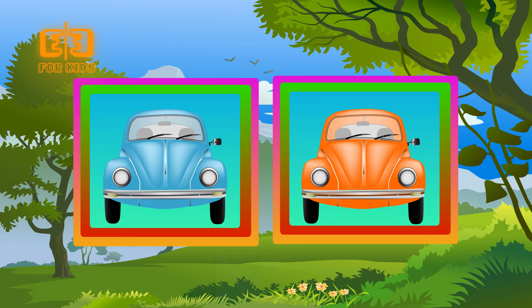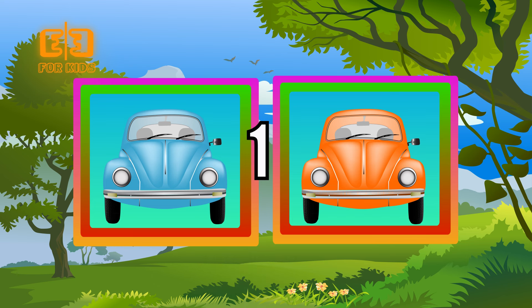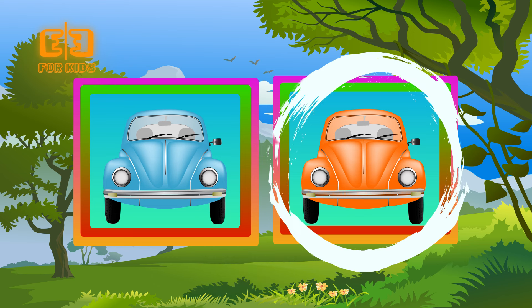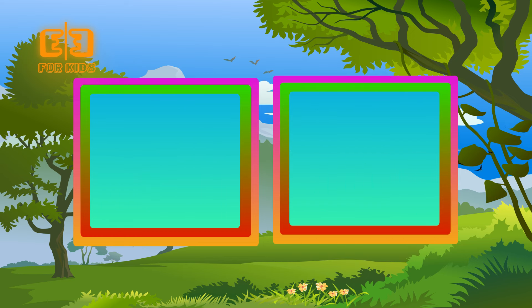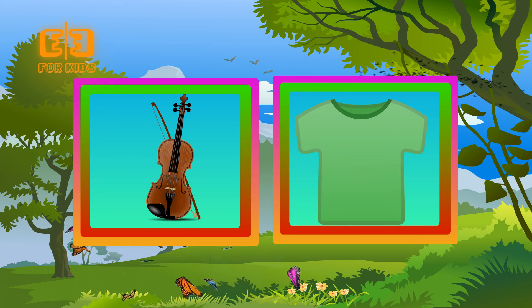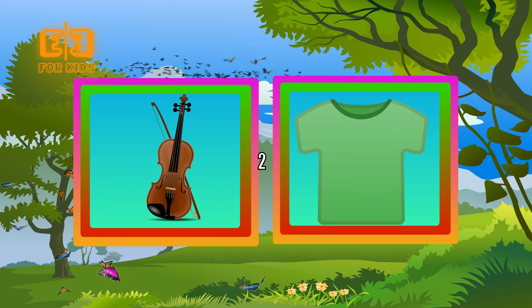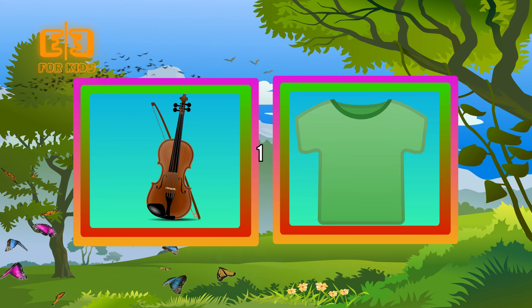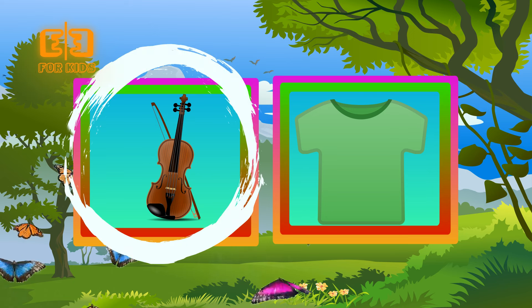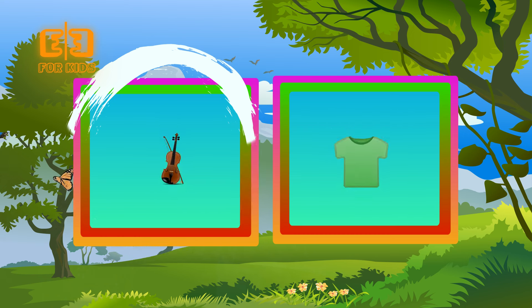Choose the orange object. Three, two, one. Correct kids! An orange car. Choose the blue object. Three, two, one. Correct kids! A brown violin.